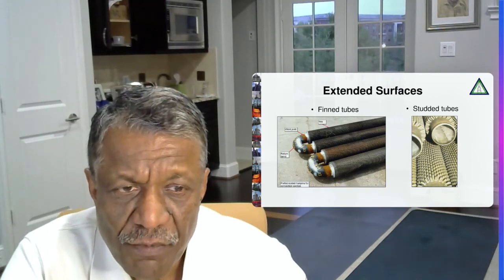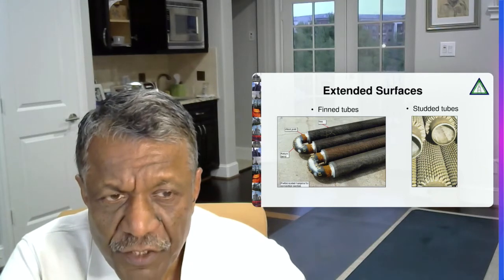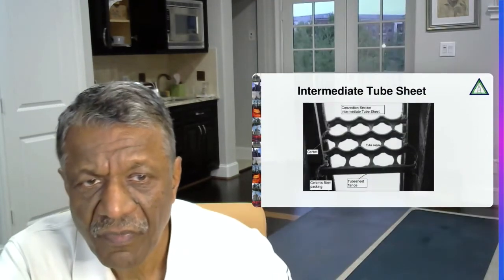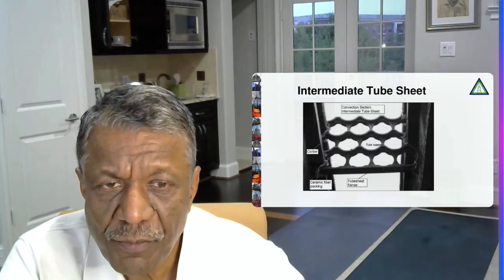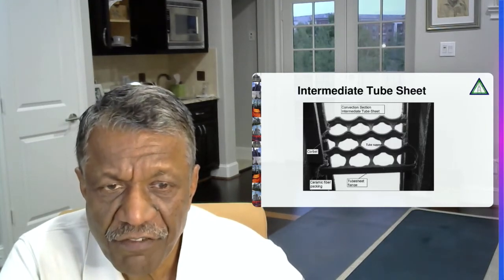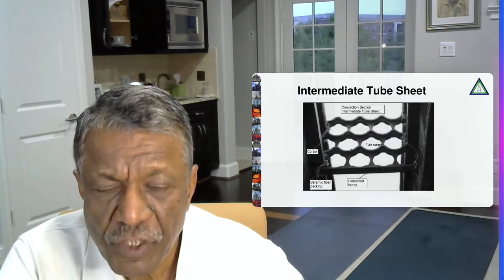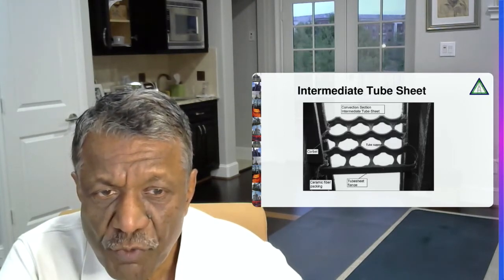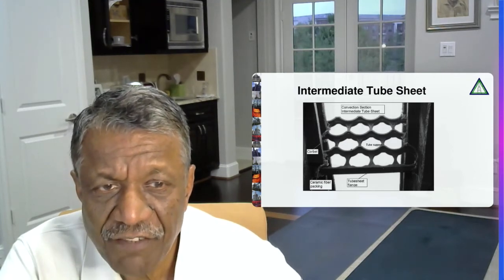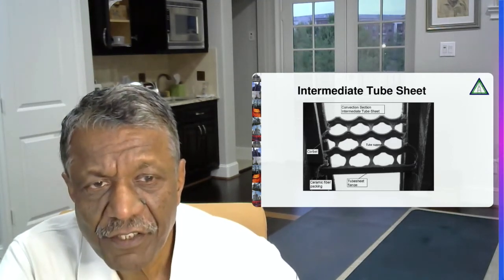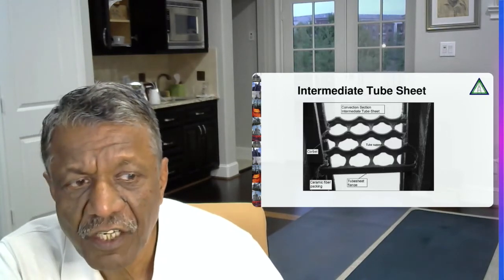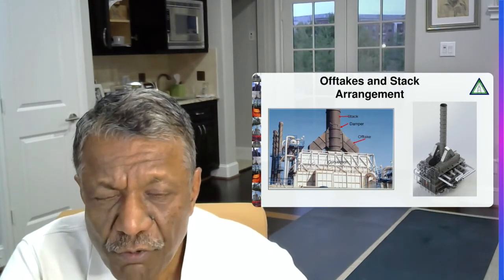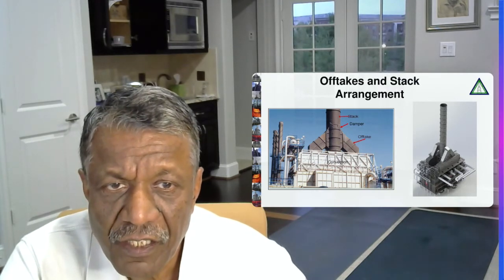Same thing with the studded tubes. Studded tubes are very sturdy and they are mostly used for oil firing because they are easier to clean. The horizontal tubes, they need to be supported every 35 diameters or 20 feet, whichever is maximum, and to keep them straight. So this is a picture of an intermediate tube sheet. These tube sheets are made out of high chrome nickel alloy because they see the high flue gas temperatures. So they are pretty expensive and important component in the fire heaters.